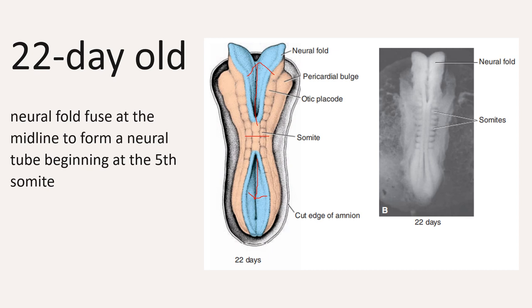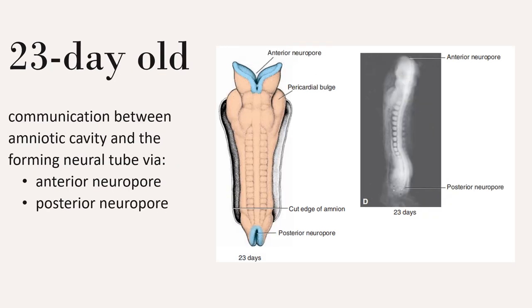As a result, a neural tube is now formed. Because the tube is not completely formed yet, the ends of the embryo actually have a communication with the amniotic cavity by way of the opening called the anterior or cranial neuropore, and at the caudal end, you have the caudal or posterior neuropore. This is a 23-day-old embryo still showing the openings at both ends.